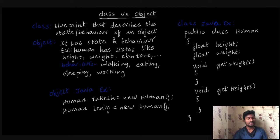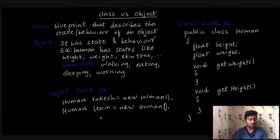Now we are going to create a human class. If there are many people in the world — for example, one billion people — then there are one billion objects. But the blueprint is just one: the human class.